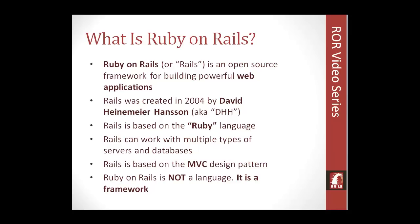Rails can work with multiple types of servers and databases. It has its own server called WEBrick, but it can also run on Apache and other servers as well. As far as databases, it comes with SQLite 3 as a default, which is a serverless database, but it can also be used with MySQL and PostgreSQL databases as well.